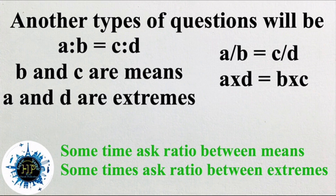Another important concept: if A is to B is equal to C is to D, then B and C are called the means, and A and D are called the extremes. Sometimes they will ask the ratio between means, and in other cases they will ask the ratio between extremes. That means A by B is equal to C by D, which gives us A into D is equal to B into C. This cross-multiplication concept is very helpful for solving problems related to ratios.